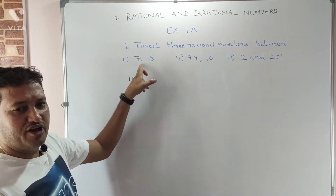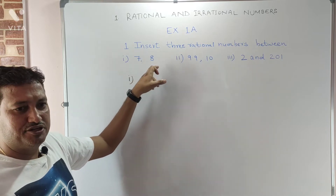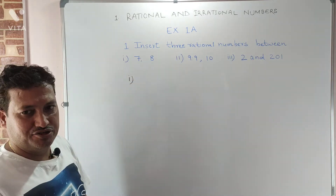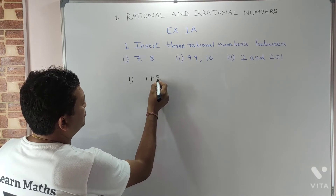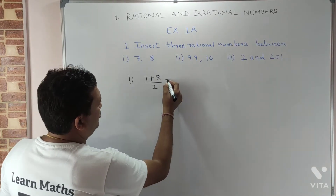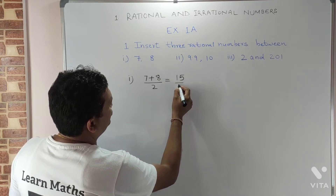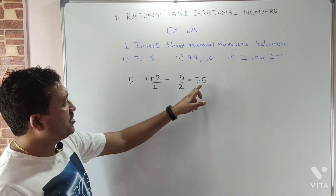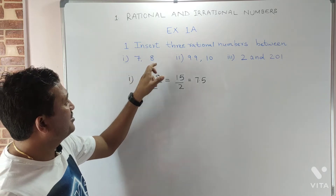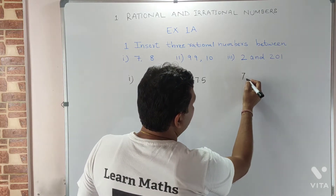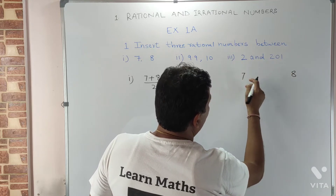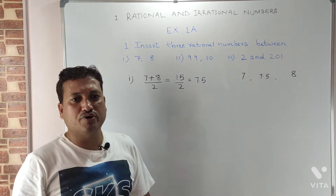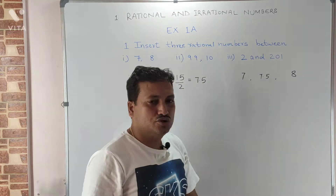First, we have to add these two numbers, seven and eight, and divide by two. It means we have to find the mean of seven and eight. So seven plus eight upon two equals fifteen upon two, which gives us seven point five. So seven point five is one of the rational numbers between seven and eight.